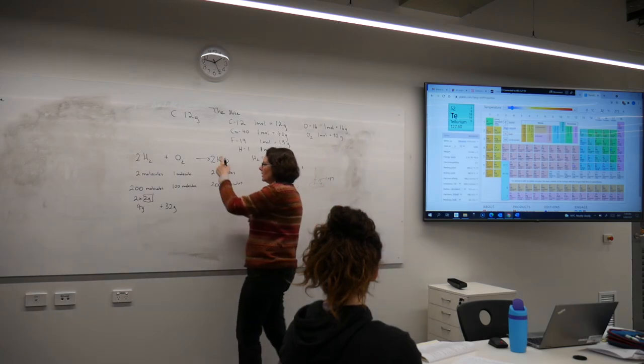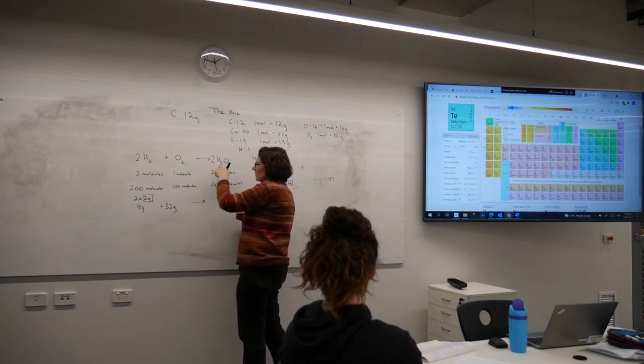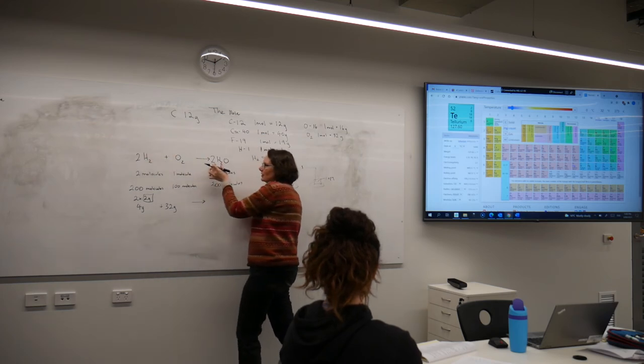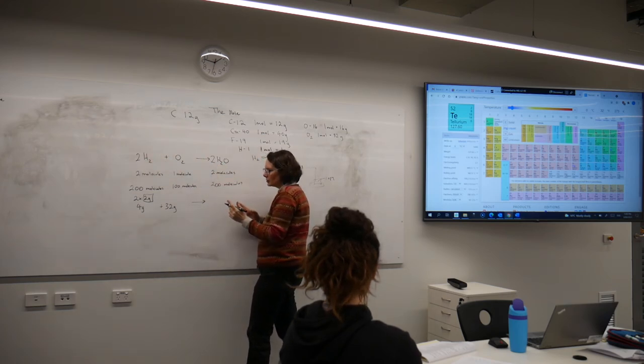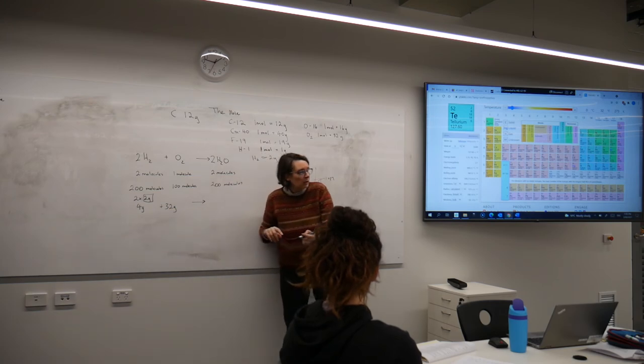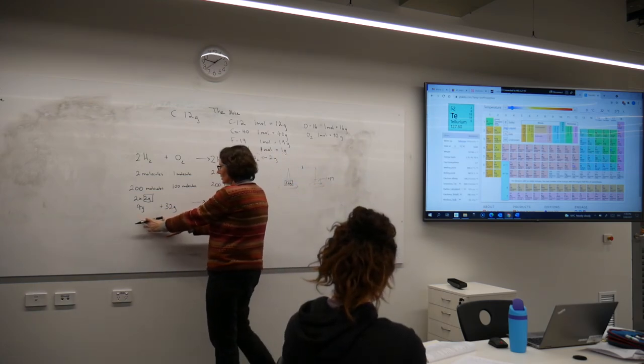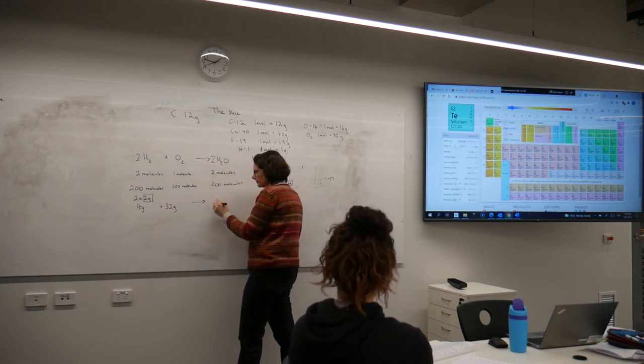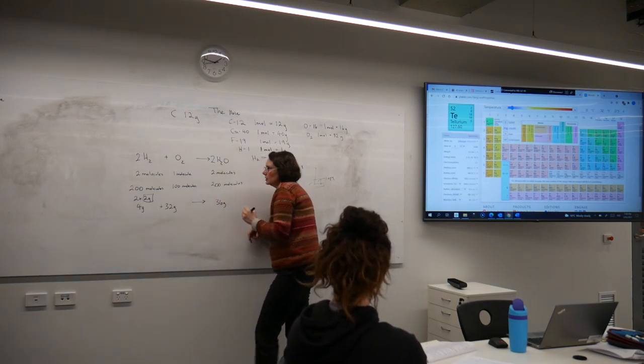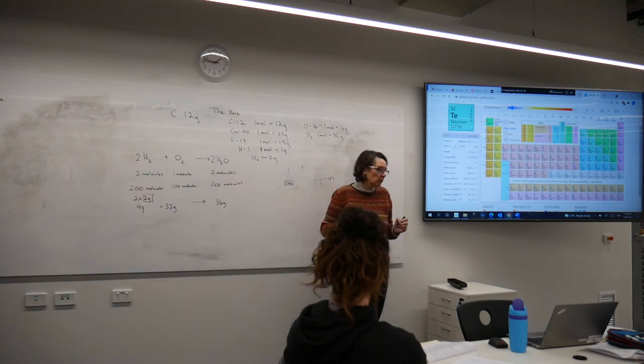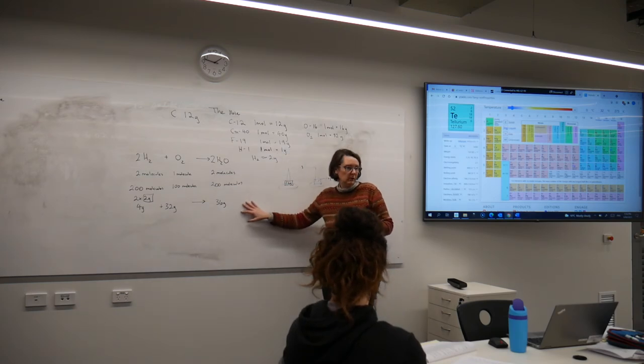So now I can start to figure things out with masses rather than counting particles. Now I can work this out, and basically all of the hydrogen has ended up in the water and all of the oxygen has as well. So the law of conservation of mass tells me that all of this mass on this side must end up here.